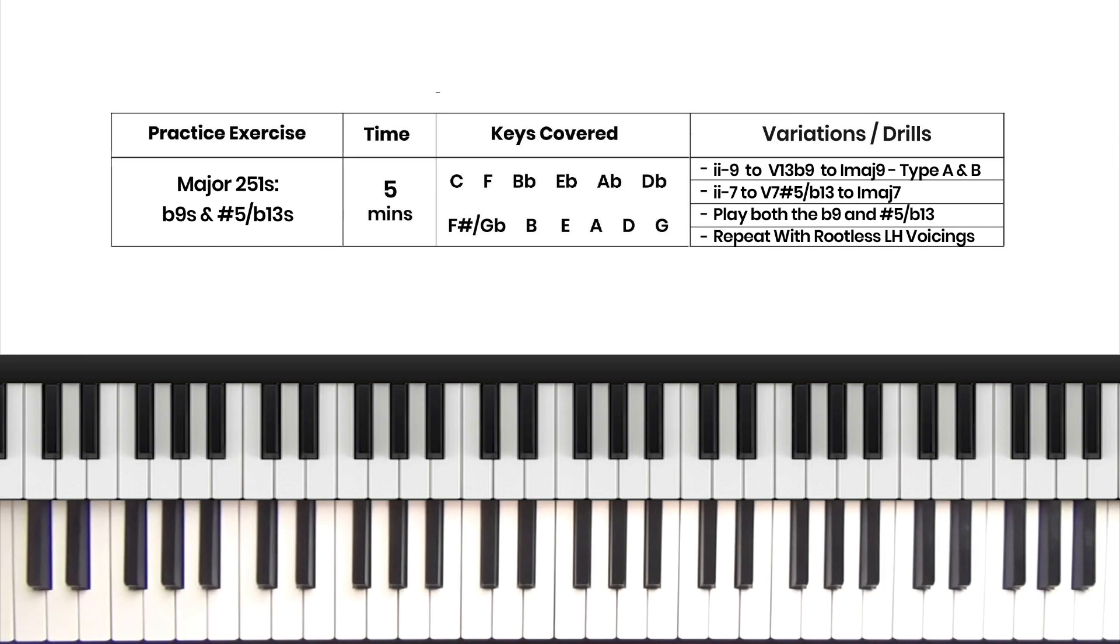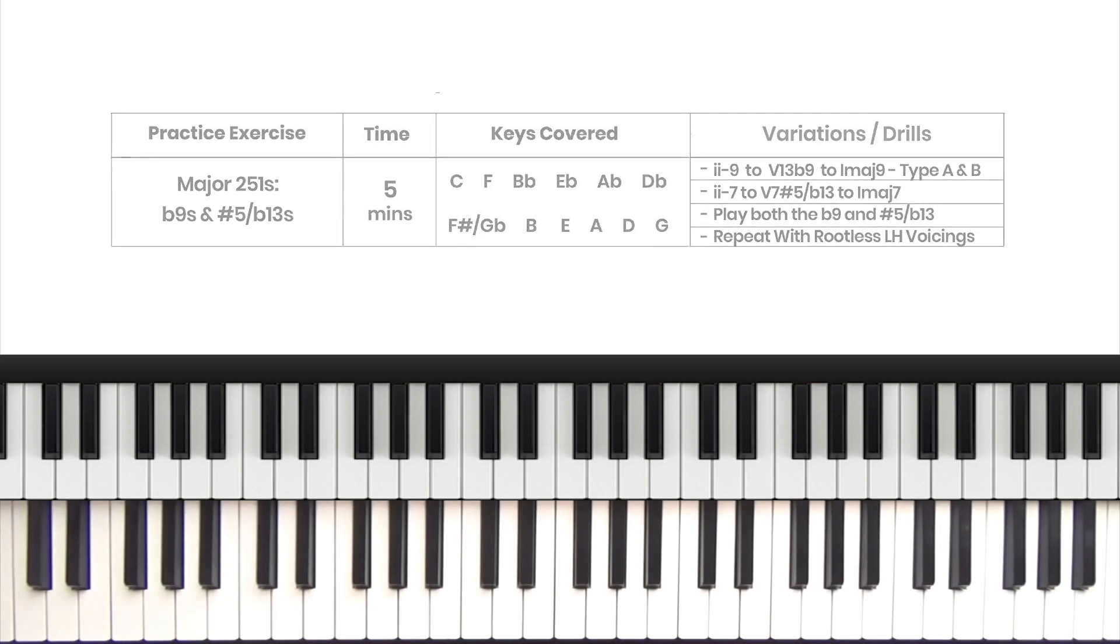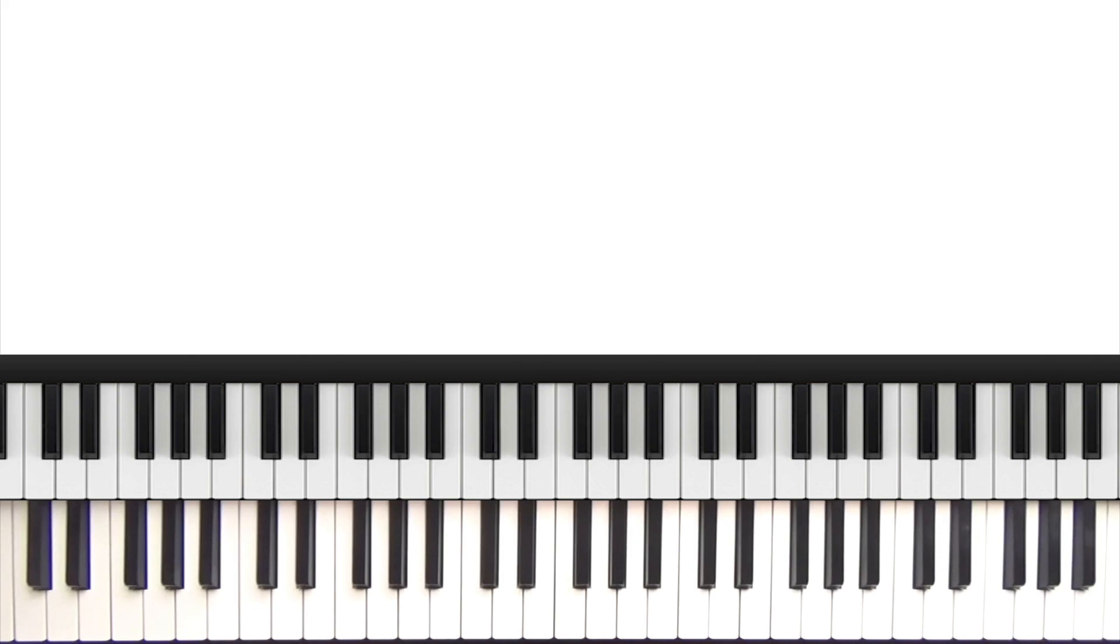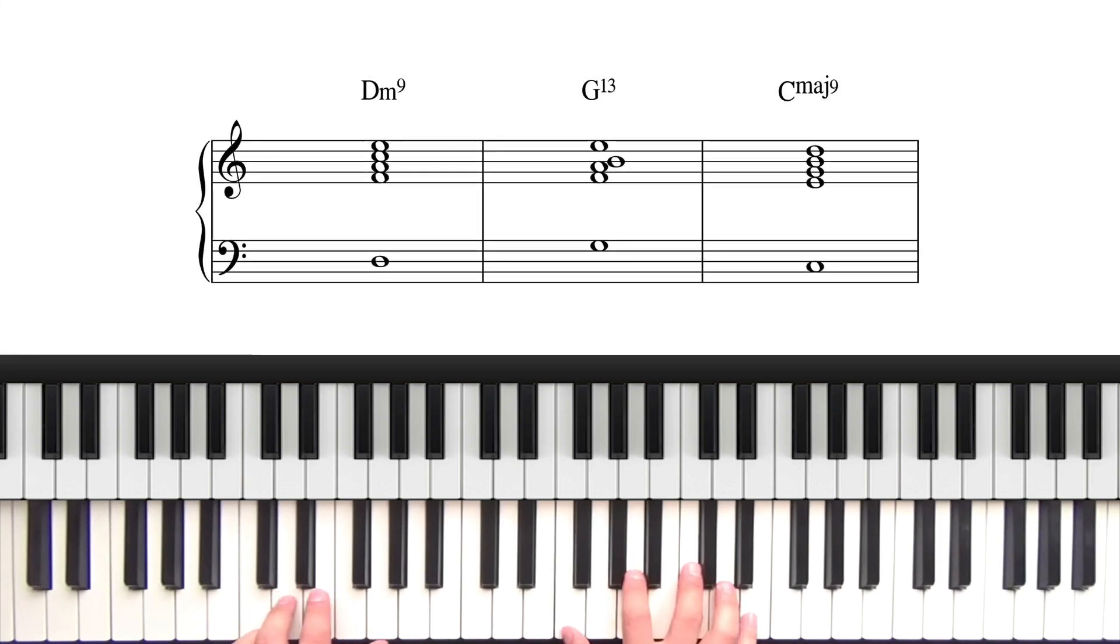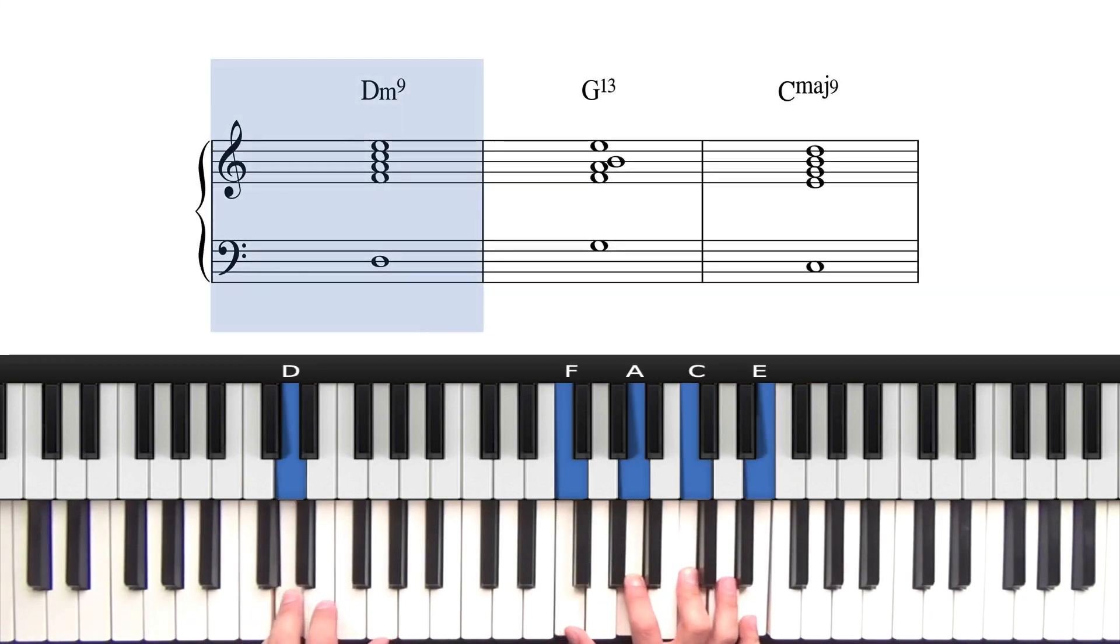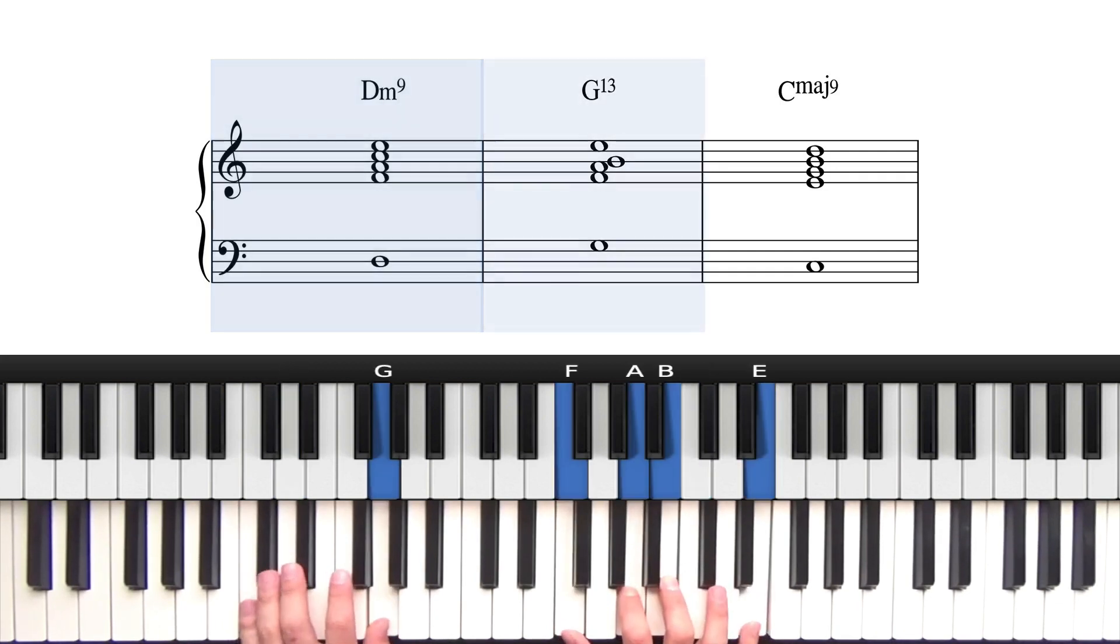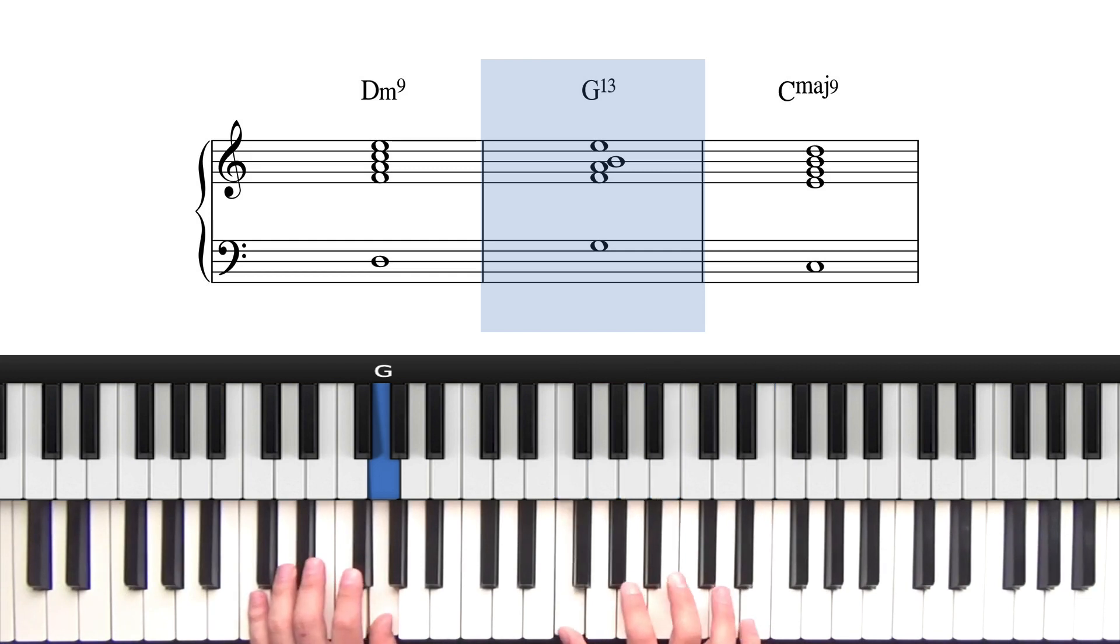We're going to take the major 2-5-1 progression and experiment with flat 9s and the sharp 5 or flat 13, however you want to call it. We're going to continue from where we left off in the extended voicings course where we played the following extended 2-5-1 progression. We played 2 minor 9 - root, minor 3, 5, minor 7, and 9 - and then we dropped the flat 7, which takes us to the 5 chord with root, flat 7, 9, 3, and 13.